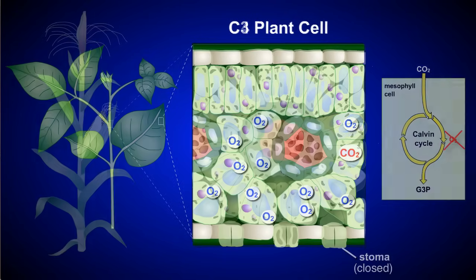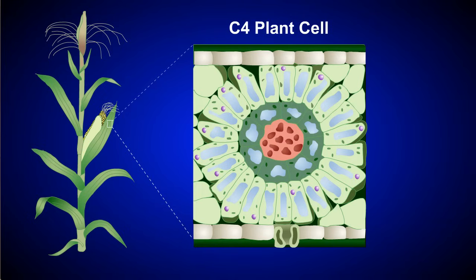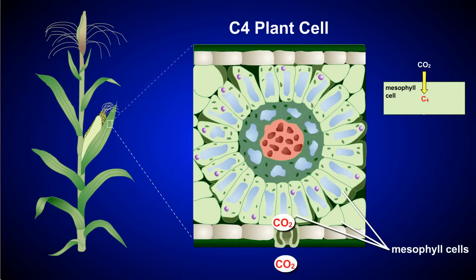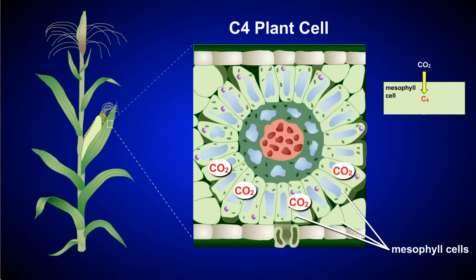Some plants have evolved an adaptation that allows them to be successful in hot, dry conditions. These plants carry out C4 photosynthesis instead of C3 photosynthesis. During C4 photosynthesis, CO2 moves into the mesophyll cell and is immediately fixed into a four-carbon molecule — thus the name C4 photosynthesis.